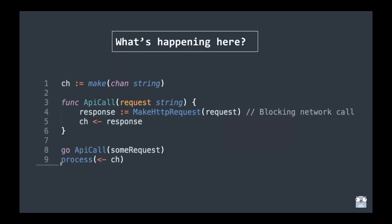Before we proceed further, let's understand what's happening in this code snippet. On line 8, we are calling a function called 'api call' and passing it some request. We have a channel of type string and a function 'api call' that makes an HTTP call — a blocking call that will block on the network. Once we have the response, it is written to the channel and processed on line 9. The question is: how does this concurrency happen?